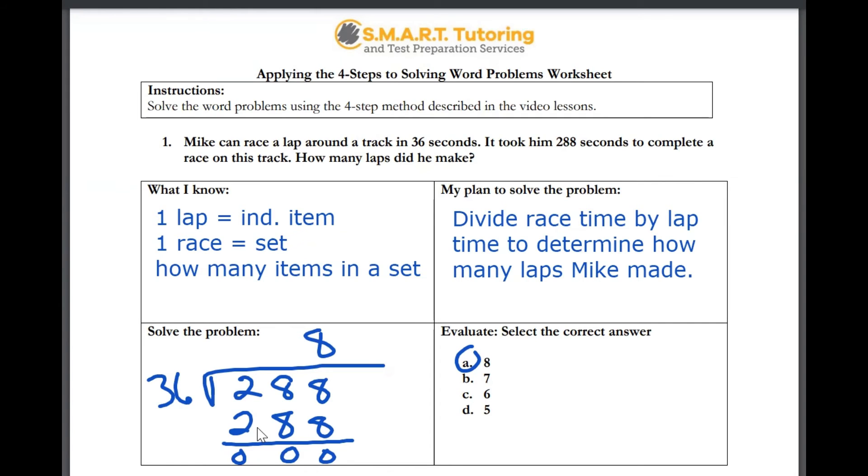Looking down to step three, you're going to move into solving the math. I do recommend that you complete the math on paper. In this case, you're going to divide 36 into 288. That goes eight times evenly for an answer of eight.